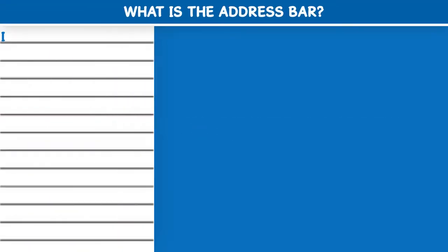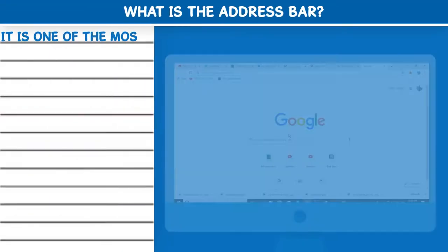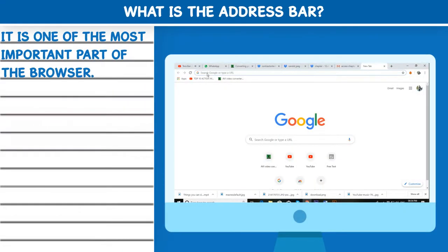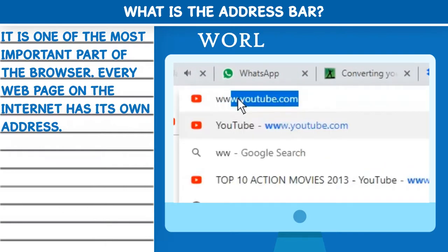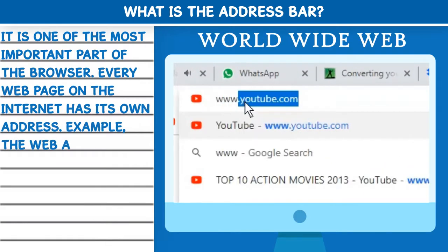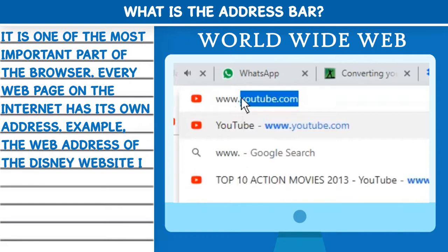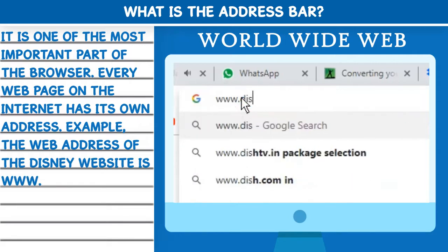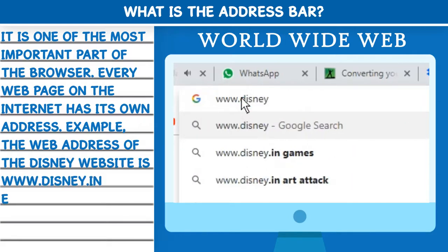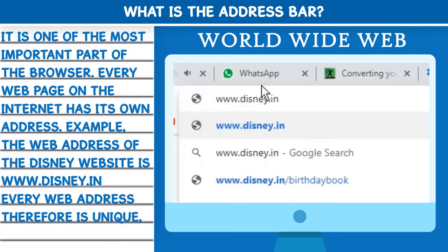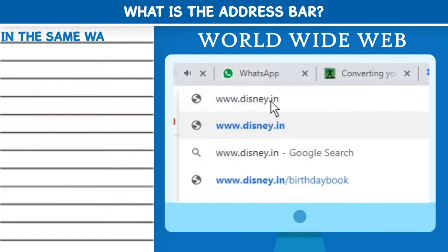What is the address bar? It is one of the most important parts of the browser. Every web page on the Internet has its own address. For example, the web address of the Disney website is www.disney.in. Every web address is therefore unique, in the same way as your telephone number is unique.